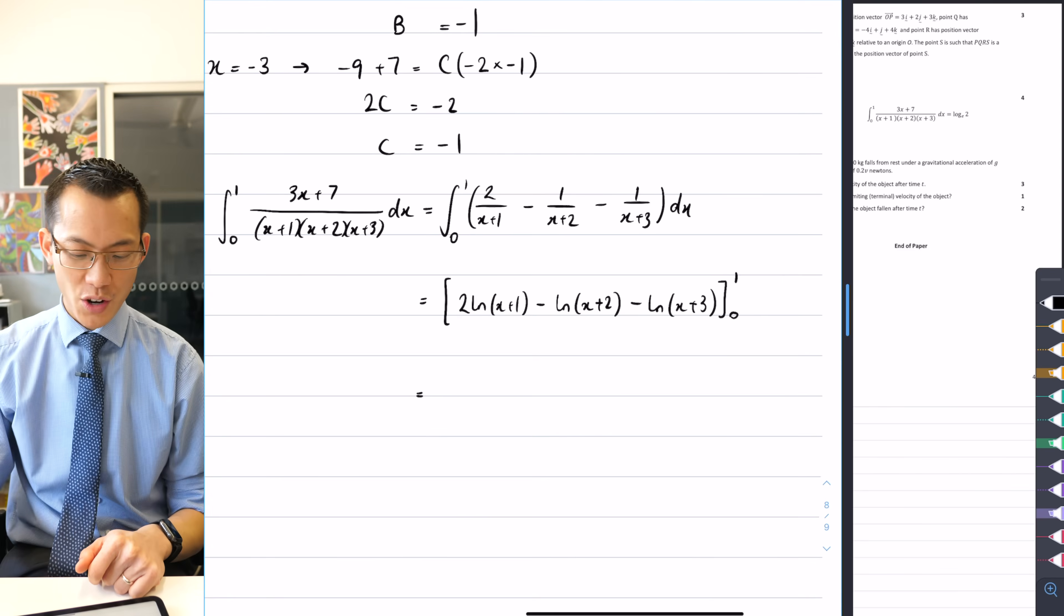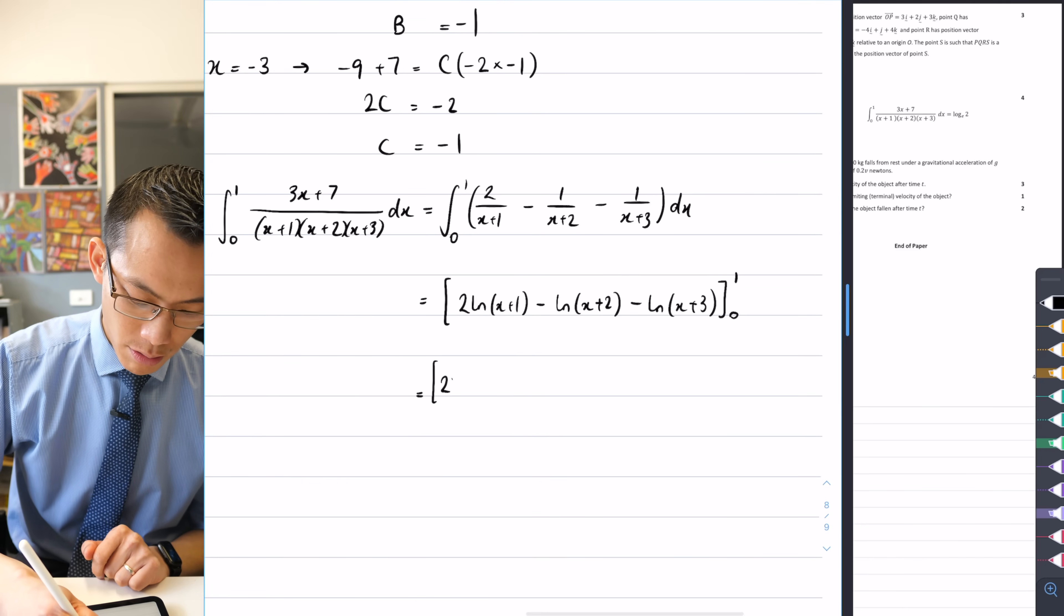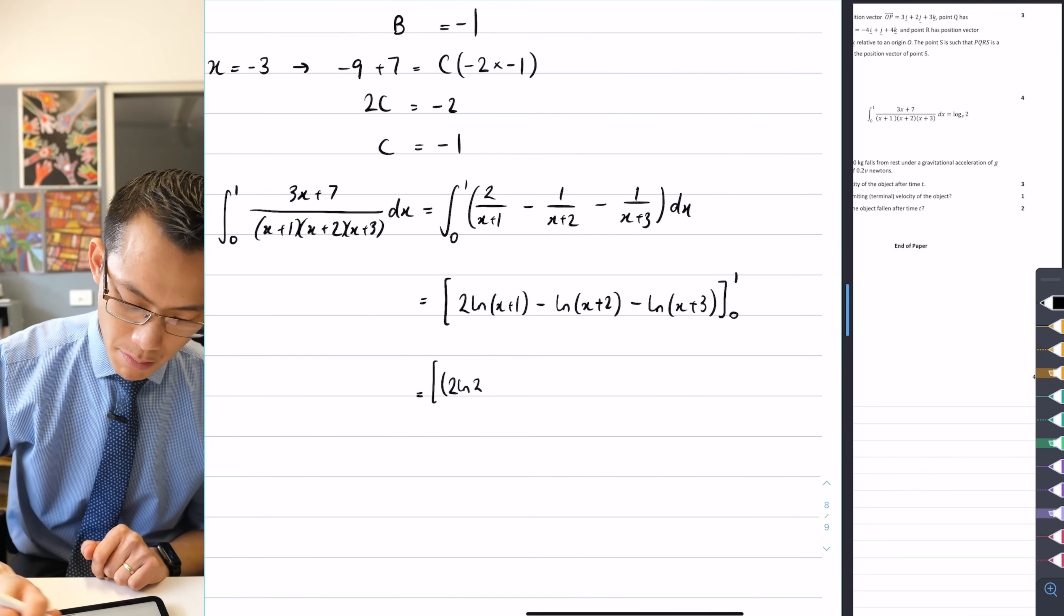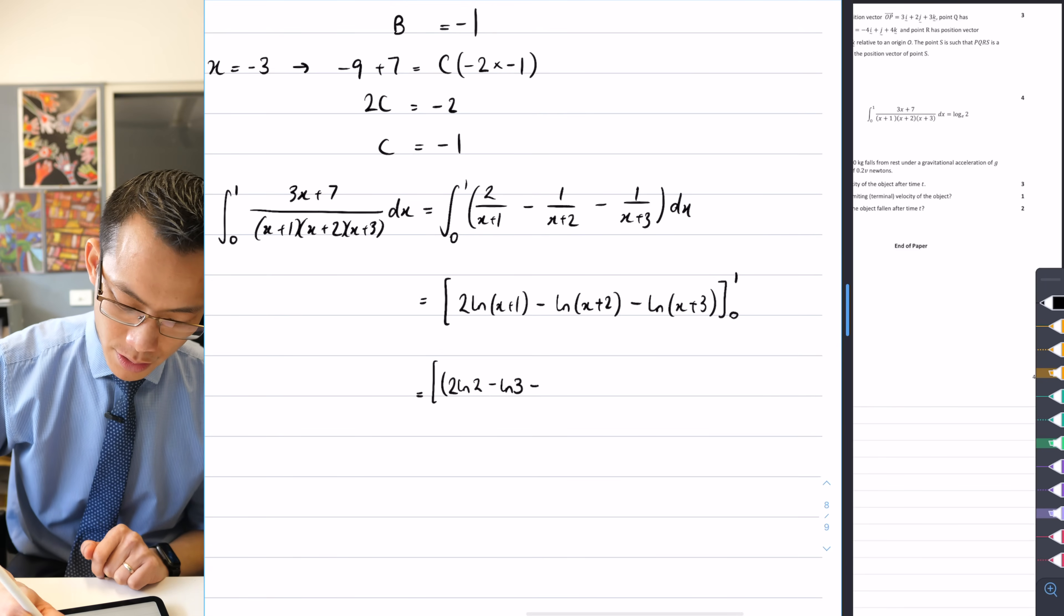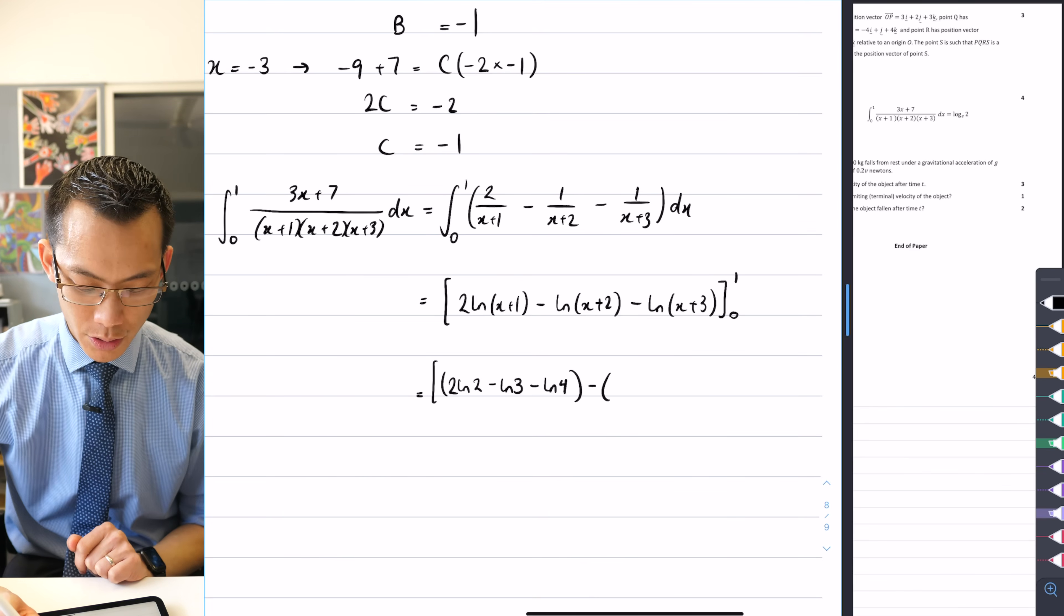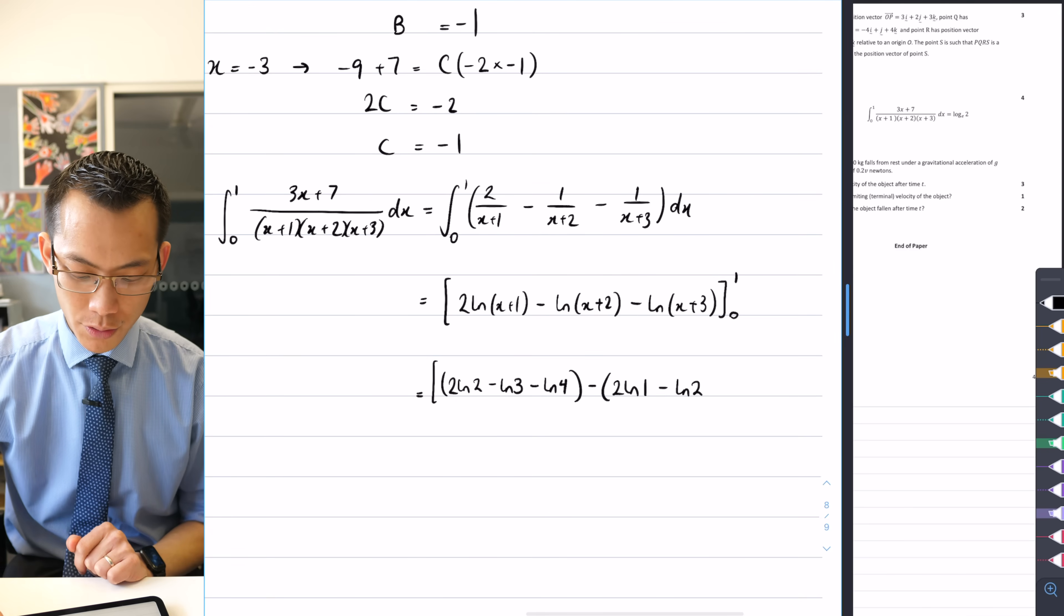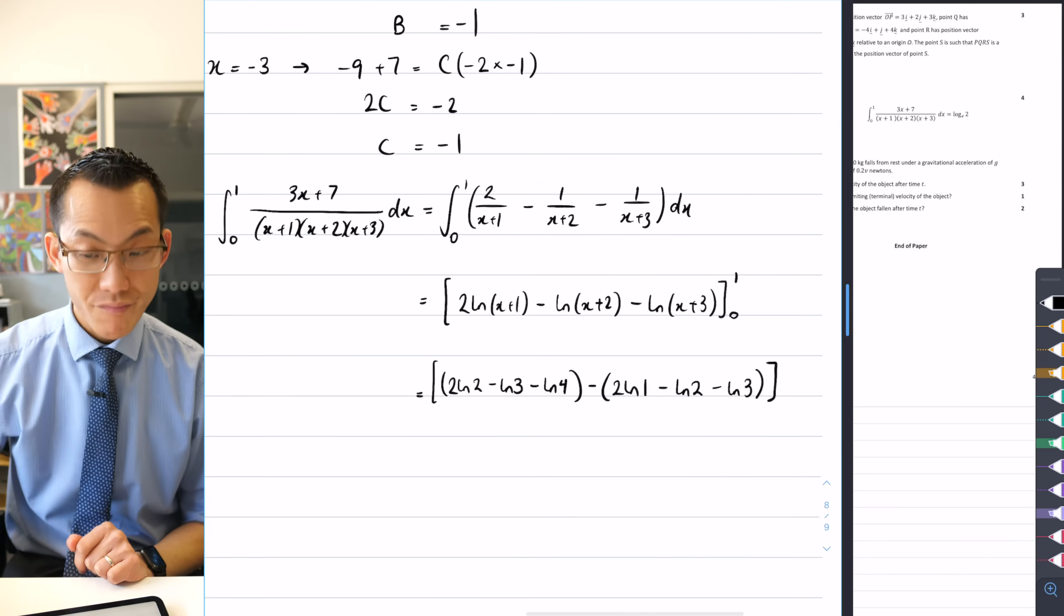Alright, let's do upper bound, take away lower bound. So it looks to me like I'm going to get 2 log 2. Let's put another set of brackets here, shall we? 2 log 2 minus log 3 minus log 4. There's the upper bound and then I'm going to subtract and we'll put in zero for everything. So I'm going to get 2 log 1 minus log 2 minus log 3. There you go. There's my substitution.